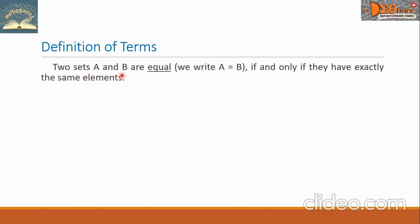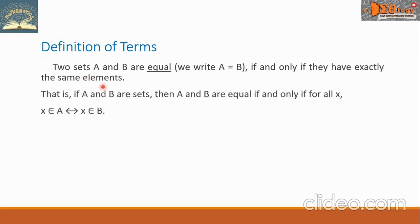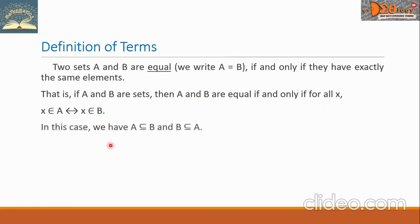Two sets A and B are equal, written A equals B, if and only if they have exactly the same elements. That is, if A and B are sets, then A equals B if and only if for all X: X is an element of set A if and only if X is an element of set B. In this case, A is a subset of B and B is a subset of A.